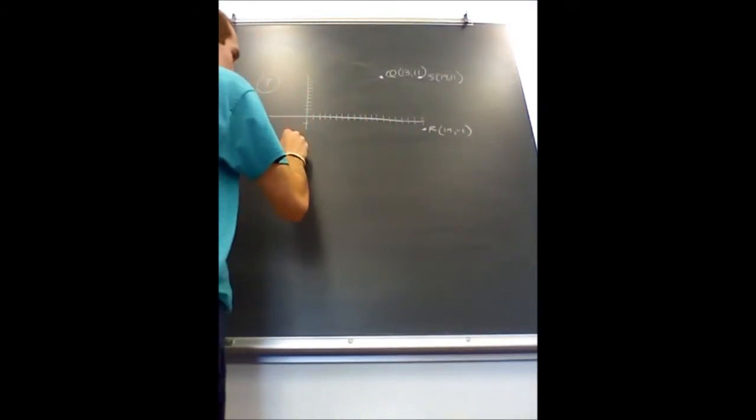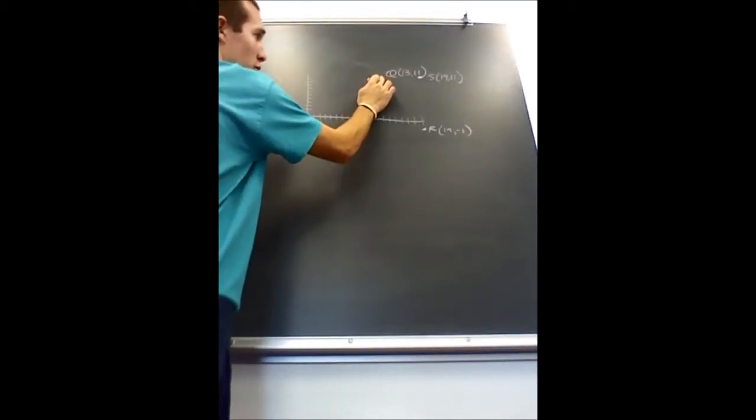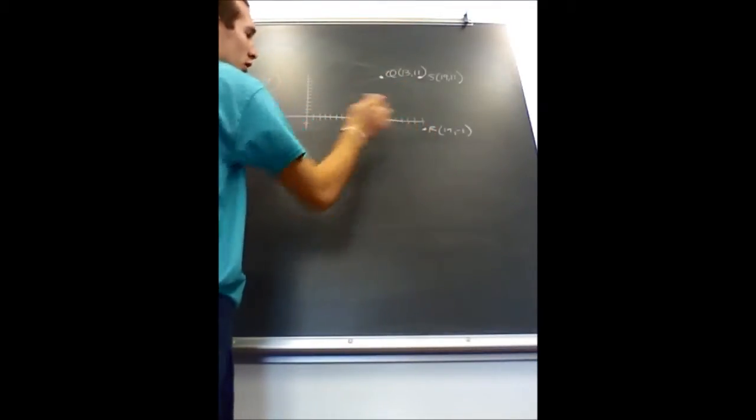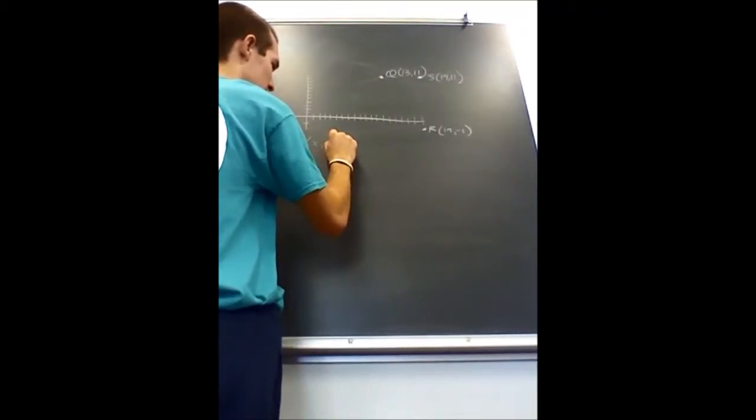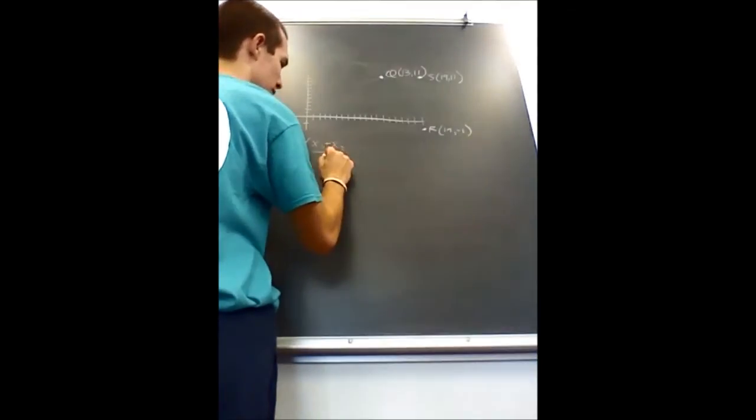And it also tells you that P is the center of the circle, which would be the midpoint between Q and R. So you have this formula for a midpoint.